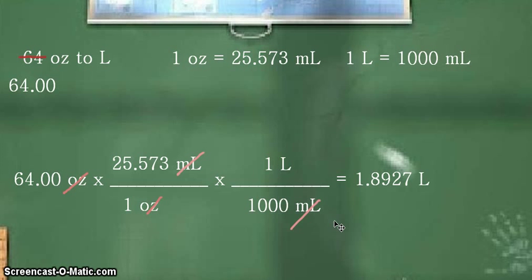So that means 64.00 ounces is equal to 1.8927 liters. But take note of the number of significant figures before you report your final answer. In the given, we have 64.00.